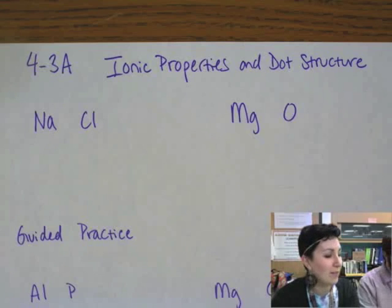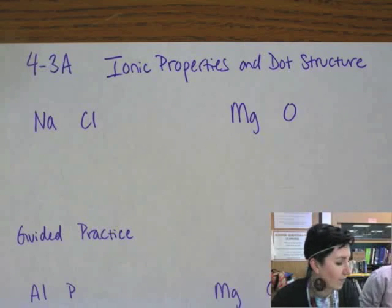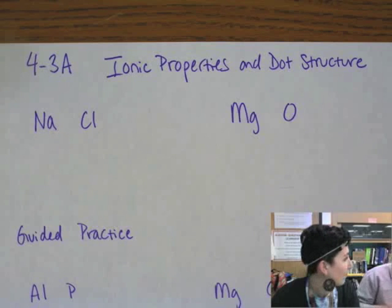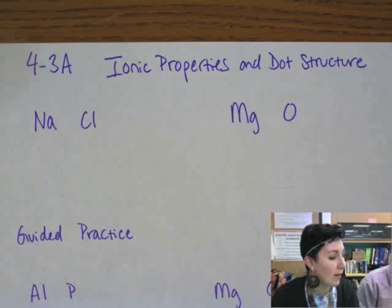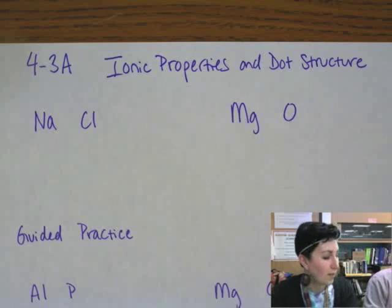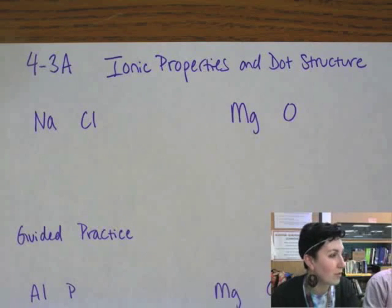So, what are we talking about today? Today we're going to talk about ionic properties and the dot structure. So we're going to see how these two will actually bond together. I remember ionic bonds. And so NaCl is one. So how do we draw the dots for that?